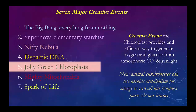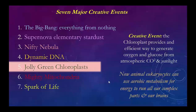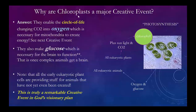The next of the seven major creative events is the Jolly Green Chloroplast. Chloroplasts provide a way to efficiently generate oxygen and glucose. We need that because neural structures run on glucose — muscles can run on fat and glucose, but once you get a neural system you have to have glucose. The chloroplast makes both out of atmospheric carbon dioxide and sunlight, putting oxygen in the atmosphere and allowing animals to have aerobic metabolism. Animal eukaryocytes can use aerobic metabolism to run all complex parts, including the brain.